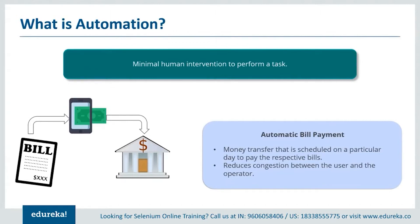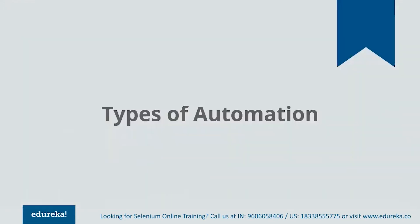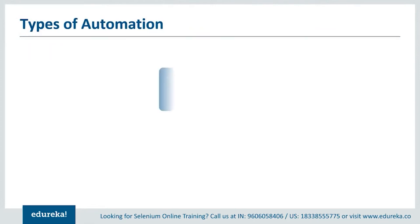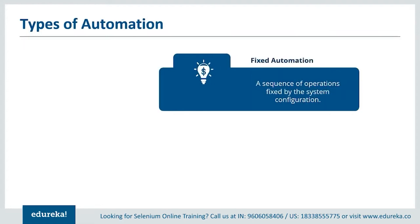Isn't it interesting how automation has evolved? So now that you've understood what automation is, let's try to understand the different types of automation that exist. There are basically three types of automation depending on the process which the user defines: fixed automation, programmable automation, and flexible automation. Fixed automation is nothing but the sequence of various operations that remains fixed and cannot be scheduled or customized by the user.